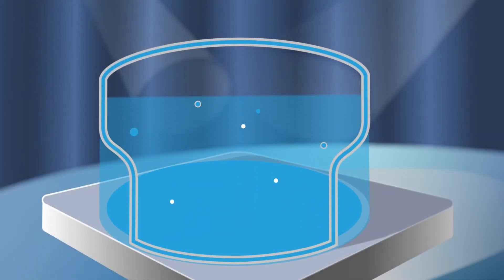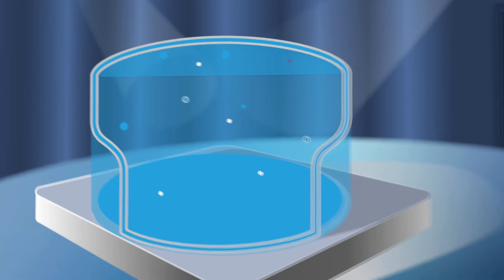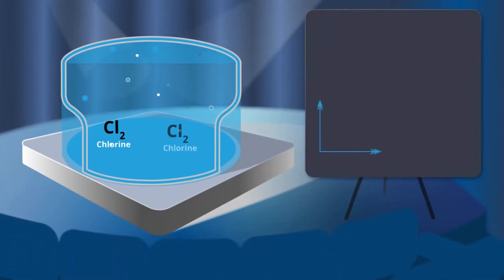To explain this concept, we'll use a closed system, a bucket of water without the presence of ammonia. As we add chlorine to the water, it's used up at first as it reacts with the existing matter in the water.